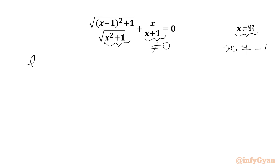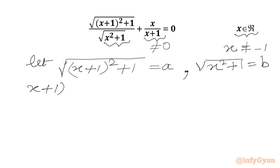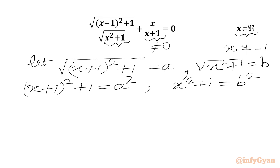Now we will use substitutions. Let us say √((x+1)² + 1) = a, and let us say √(x² + 1) = b. Now we will square both sides: (x+1)² + 1 = a², and x² + 1 = b².